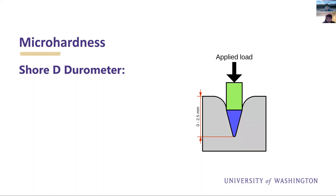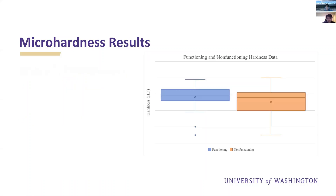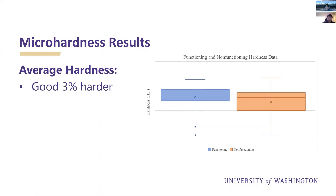Next we have micro hardness tests conducted using a Shore D durometer and stand. A micro hardness test measures the depth of indentation for a constant applied force with a standard indenter, producing a dimensionless value for relative comparison. The results were much closer than the bend test, with the good samples only three percent higher than the bad, though a t-test confirmed the mean good exceeded the mean bad at the 99 percent confidence level.